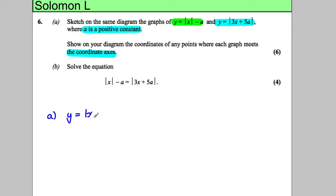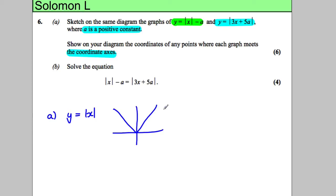Firstly, you should probably know what the y equals the modulus of x graph looks like. It looks like a V-shape: it's y equals x for x greater than 0, and y equals negative x for x less than 0.